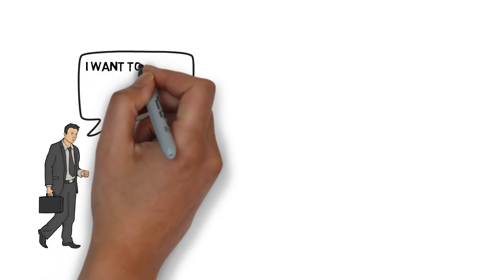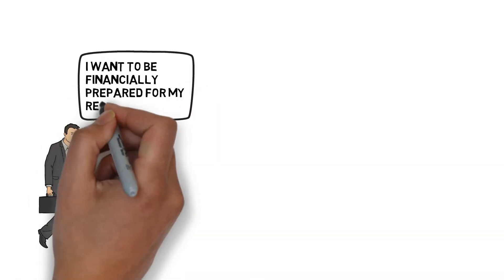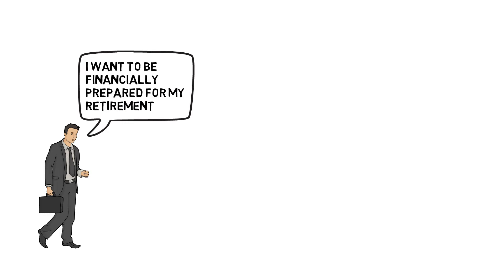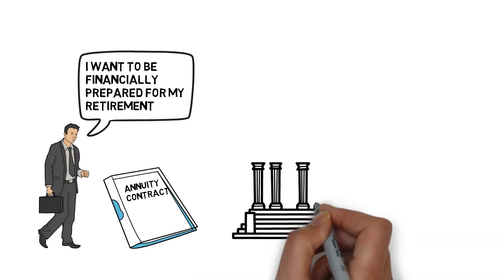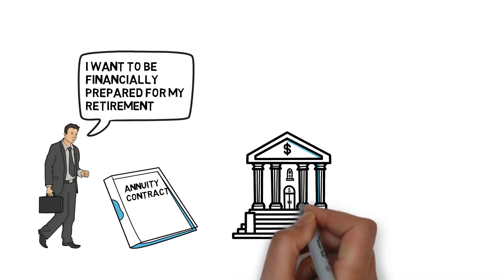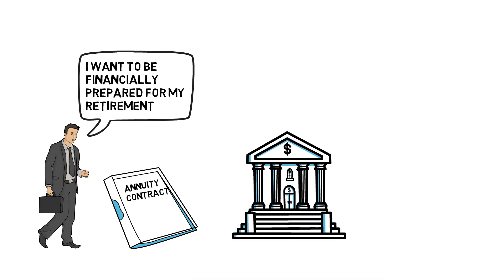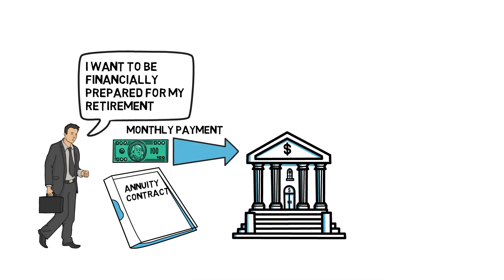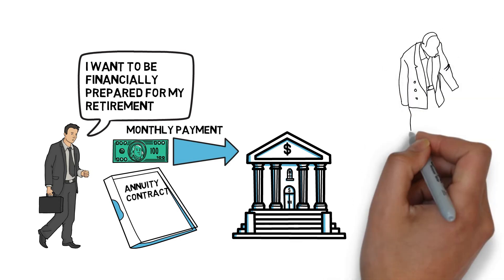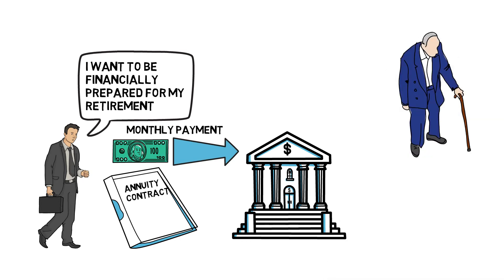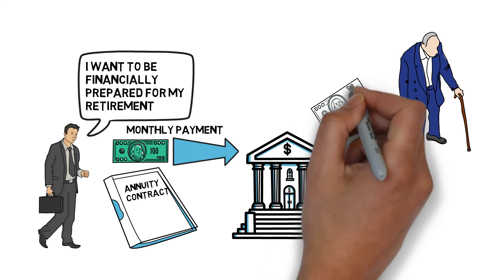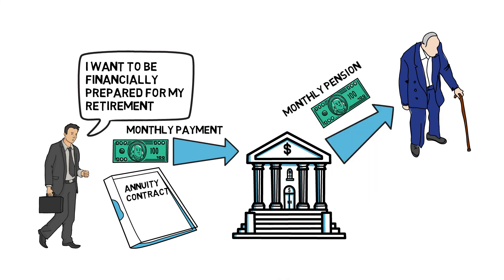For example, let's say you are employed and you want to be prepared financially with your retirement. So what you did is you signed an annuity contract with a financial institution and start to pay them monthly. Once you reach your retirement age, which is 60 years old, the financial institution will now give you money every month as your source of income for you to sustain your daily needs.